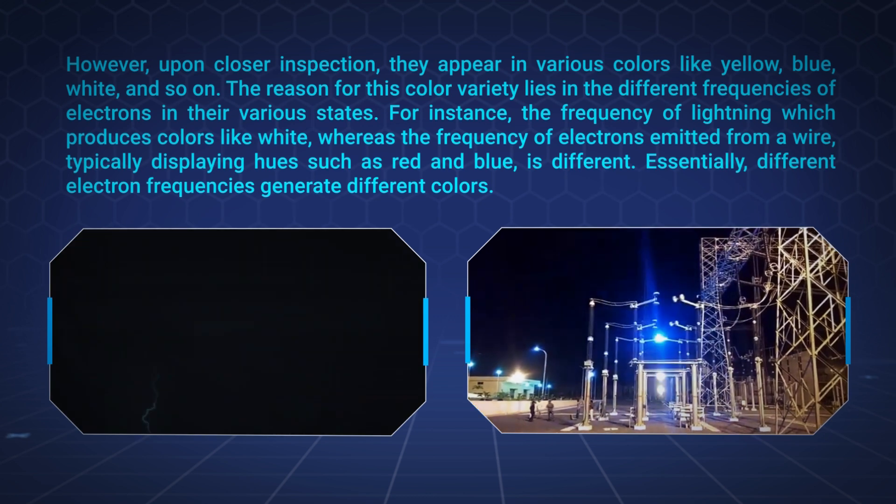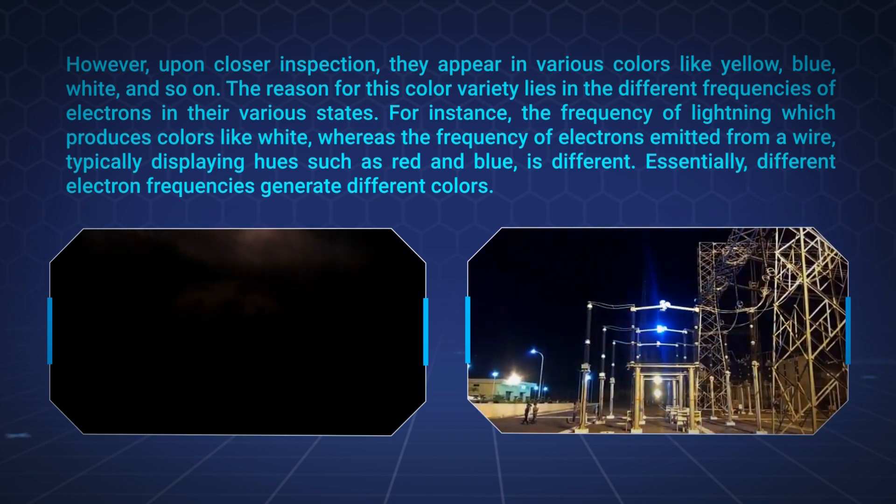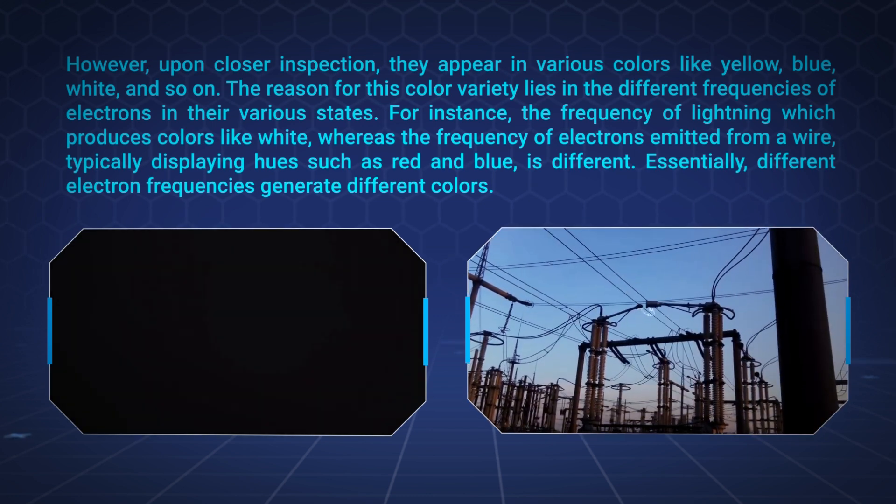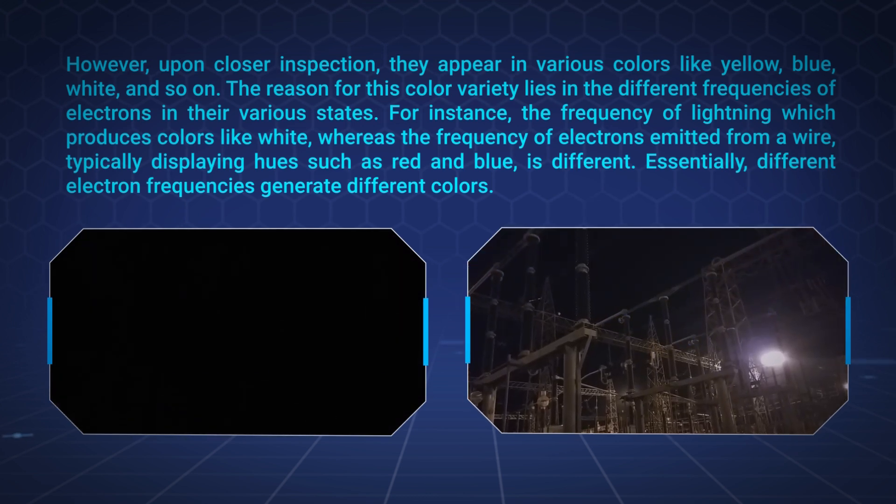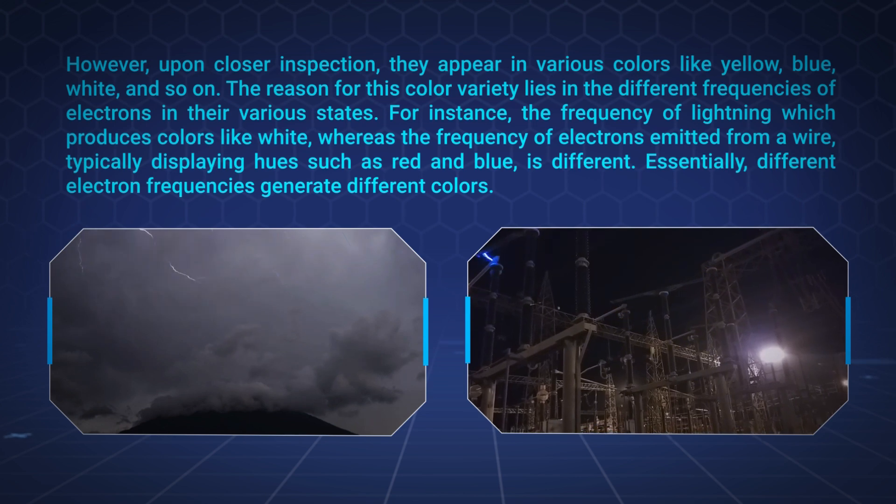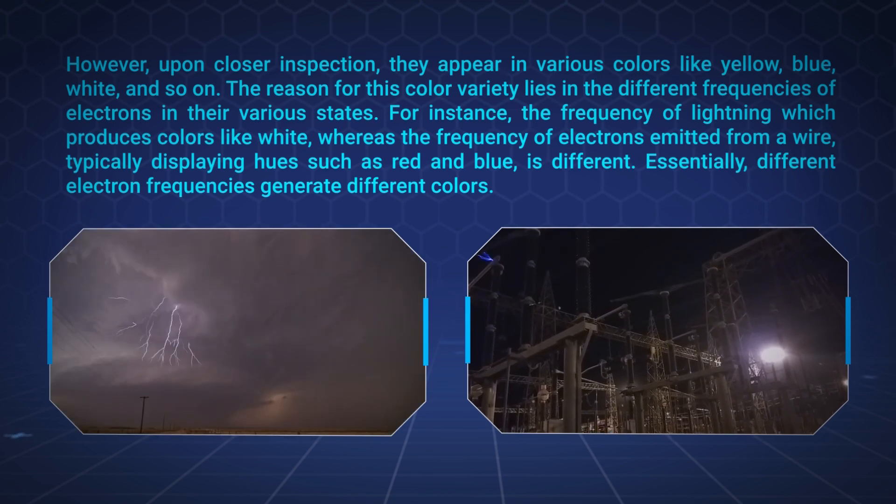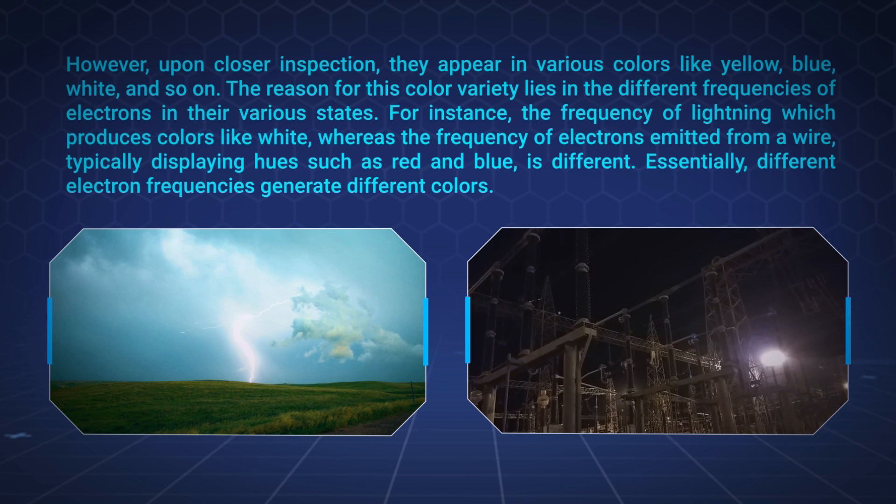For instance, the frequency of lightning which produces colors like white, whereas the frequency of electrons emitted from a wire, typically displaying hues such as red and blue, is different. Essentially, different electron frequencies generate different colors.